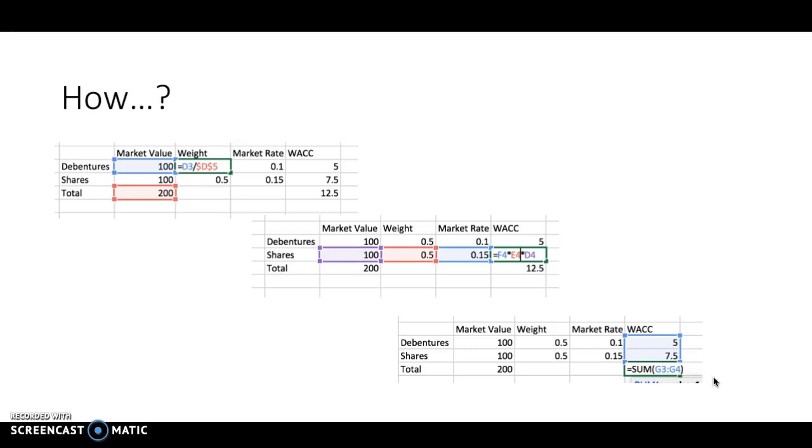If I was going to do that in Excel, this is all the same Excel table by the way, I'm just showing you with different formulas. To calculate the weight of the debentures and the shares, I took the cost of the capital of debentures and divided by the total capital. That gives me the weight. In order to work out the weighted average cost of capital for each row, I took the market value times its weight times the market rate, and then I added it all up together to get the final answer.